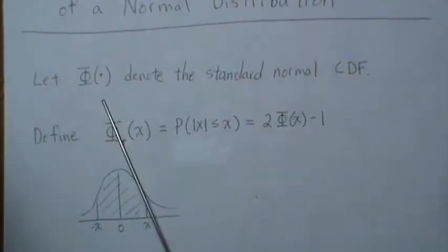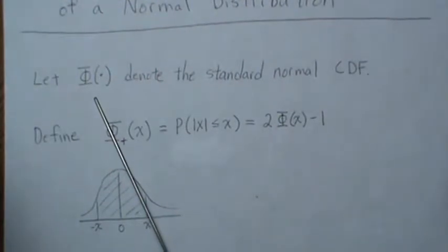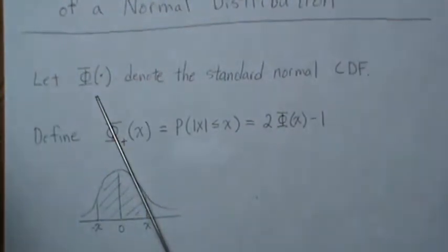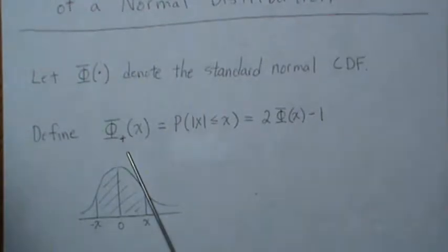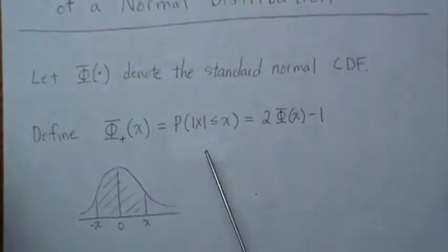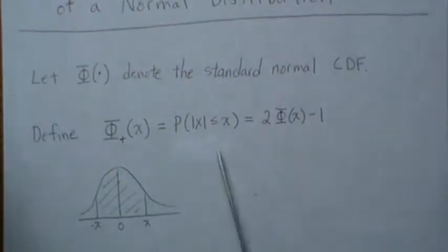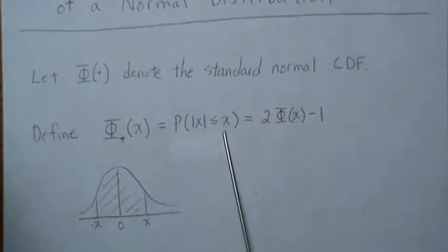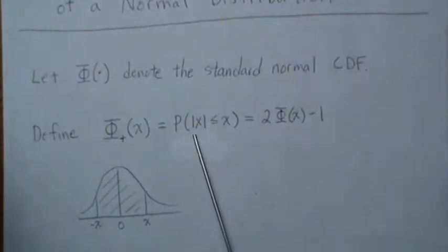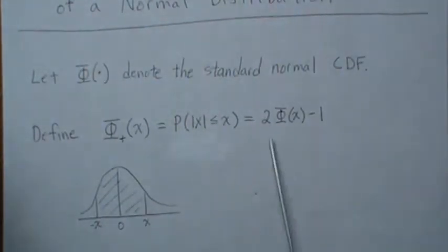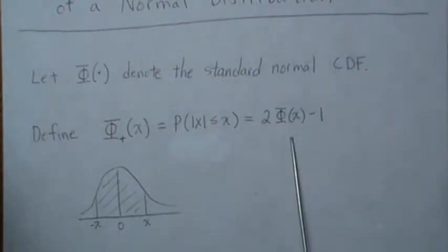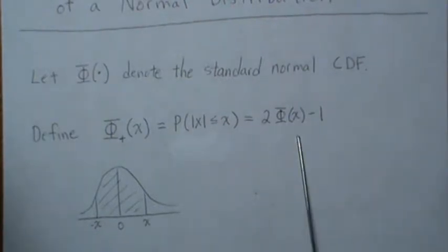This is the standard normal CDF — cumulative distribution function. We're going to define a new distribution called phi-plus. It is the area defined by x and minus x, which is the probability that the absolute value of x is less than or equal to x, where x is the standard normal random variable. This is equivalent to the cumulative distribution function minus the folded portion, and ends up being equal to that expression.